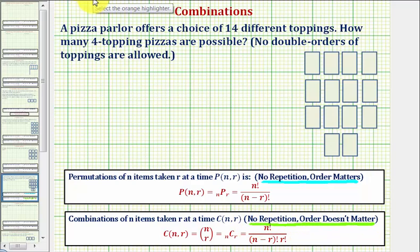So to illustrate this, let's say these are the 14 toppings, and we select four of them, let's say these first four. If we change the order of these four toppings, would it change the pizza?